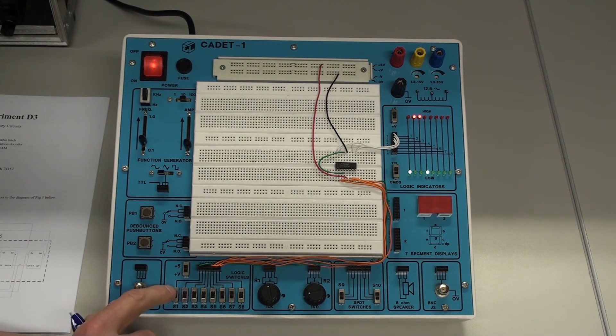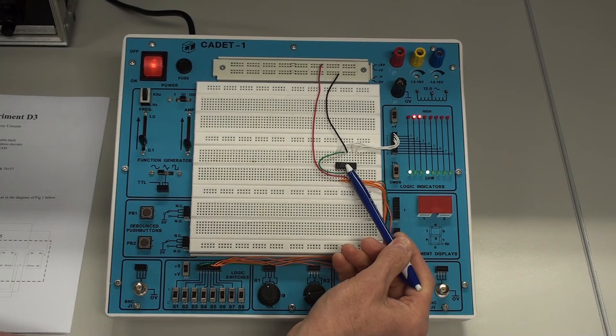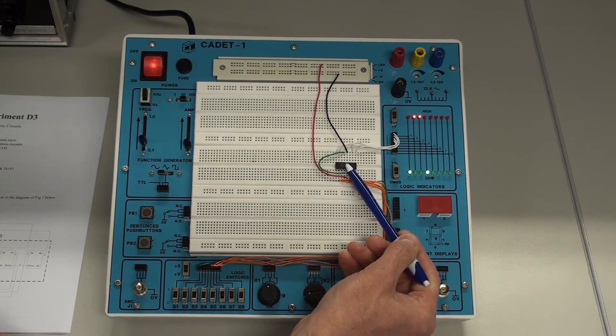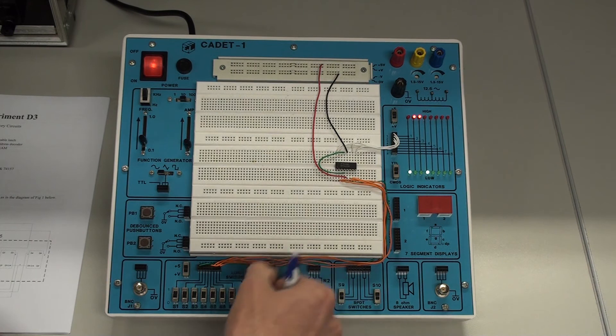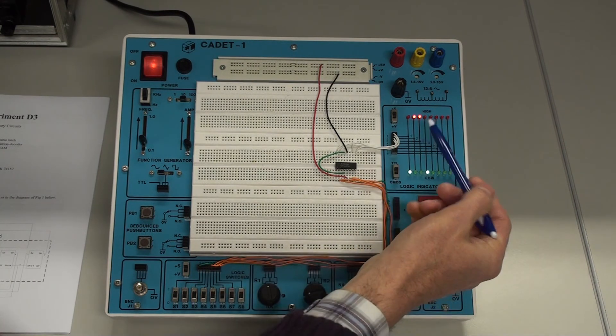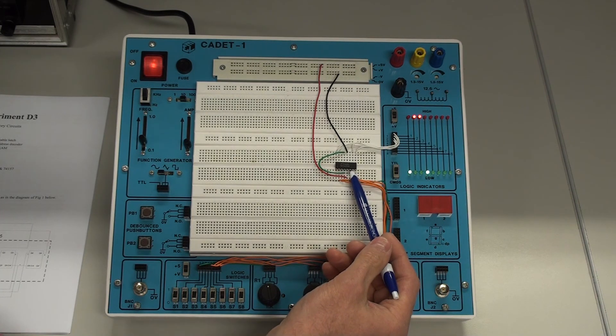Then if I switch the enable to zero, I lock that information into the latch. In other words, it's going to remember that information. So regardless of what I do now on the switches, there is no change on the output here. So the information has been written into the latch.